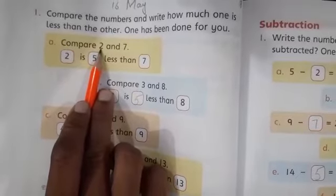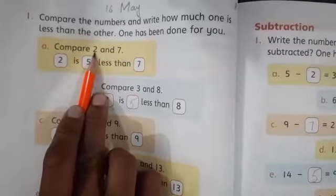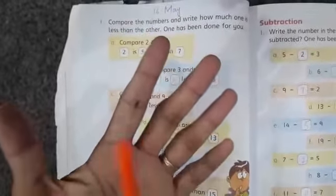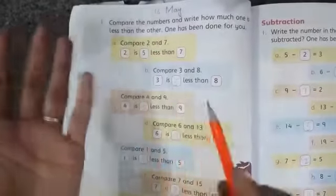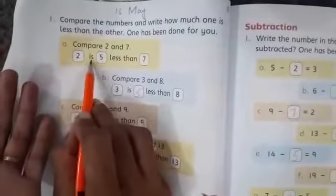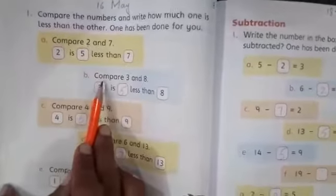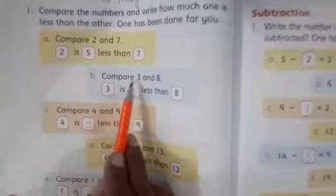Our less number: 3, 4, 5, 6, 7. So 2 is 5 less than 7. Next part b, compare 3 and 8.